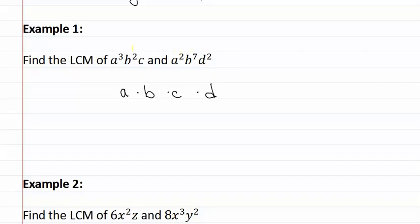If we look, a has either a three or a two, so we pick the higher of the two exponents which is a three and write it in our answer. Next, we look at b. b either has a two or a seven. Seven is the higher exponent, so we write that in our answer.